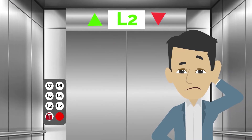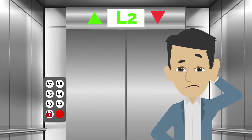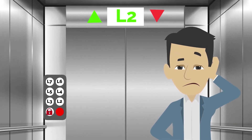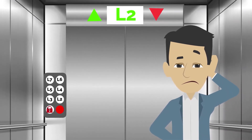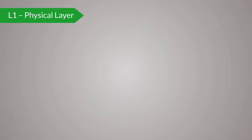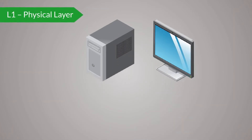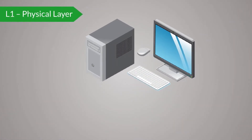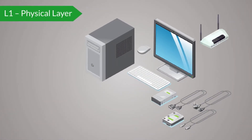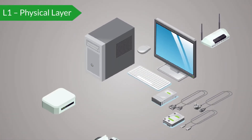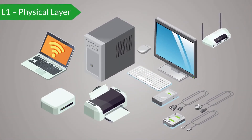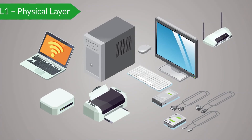Hey, aren't we forgetting something? There's another floor — L1. The physical layer, L1, includes the cabling and wireless connections among devices, as well as specifications of the jacks, plugs, voltages, etc.